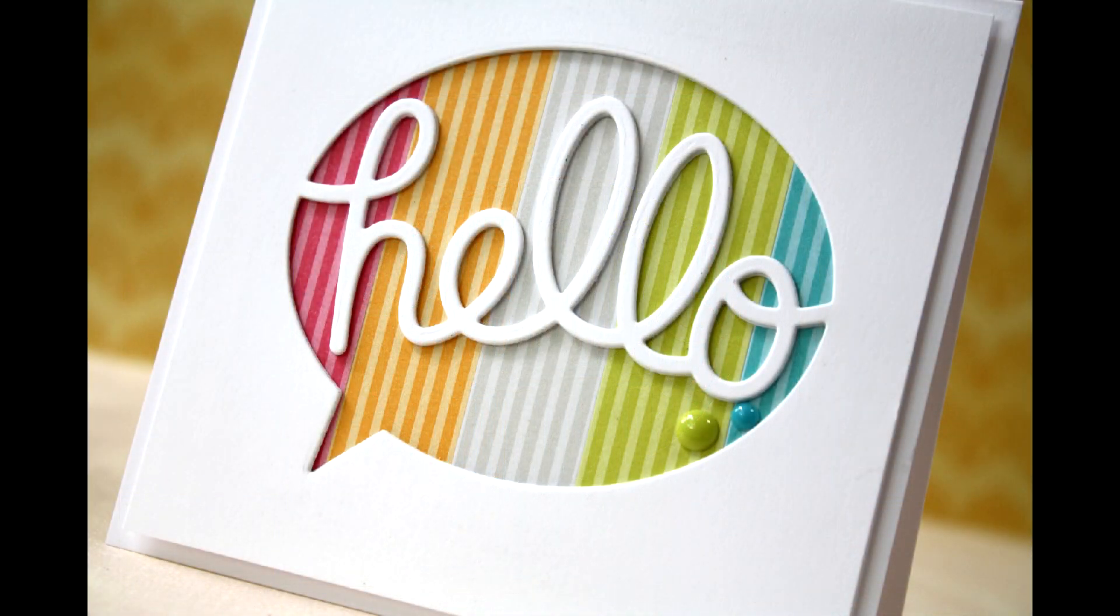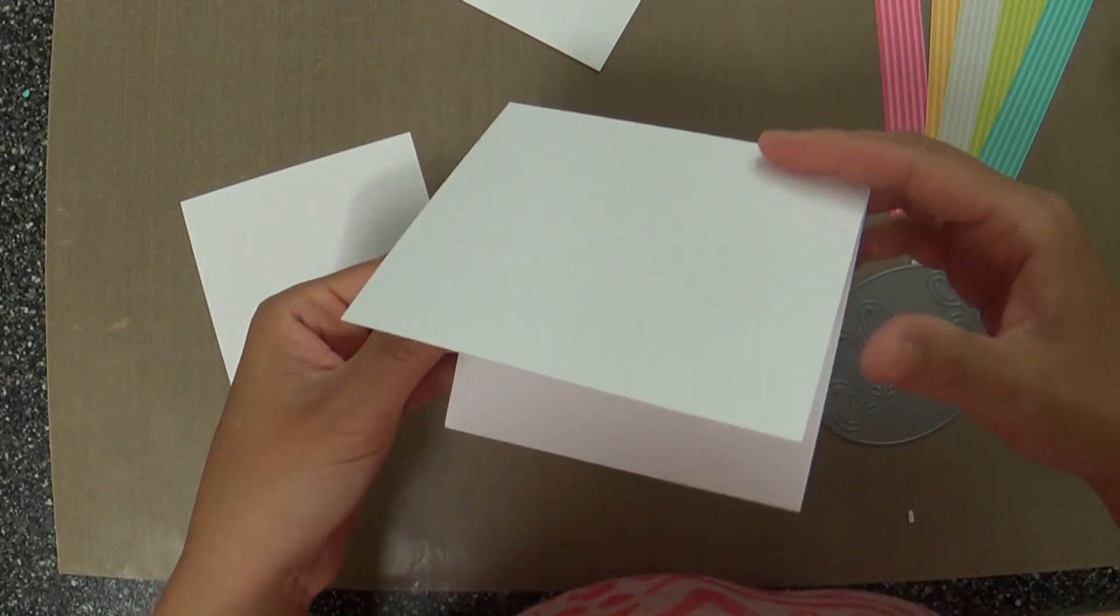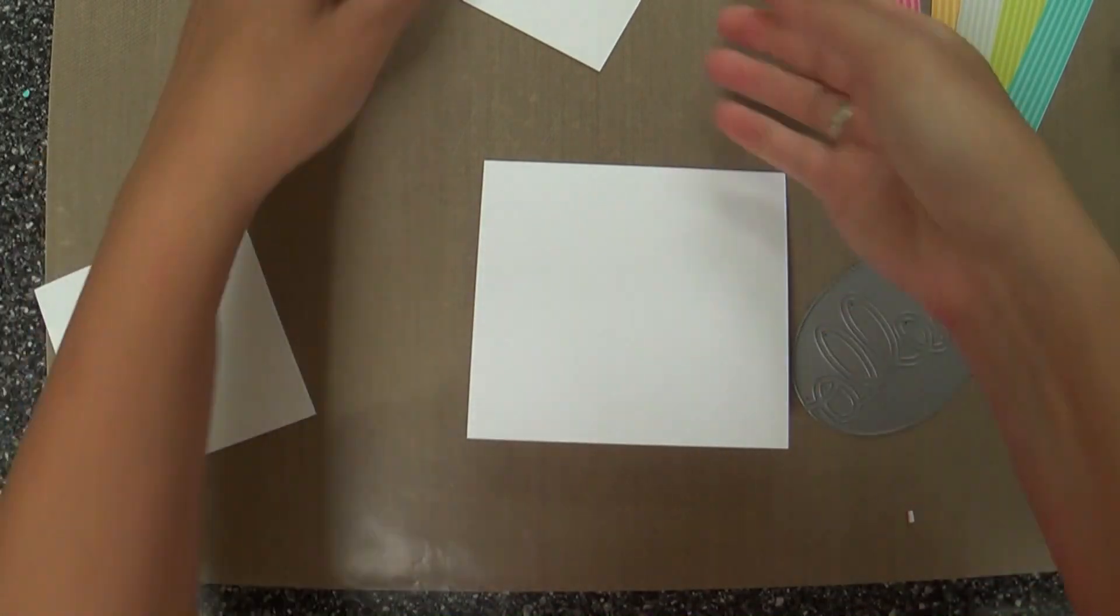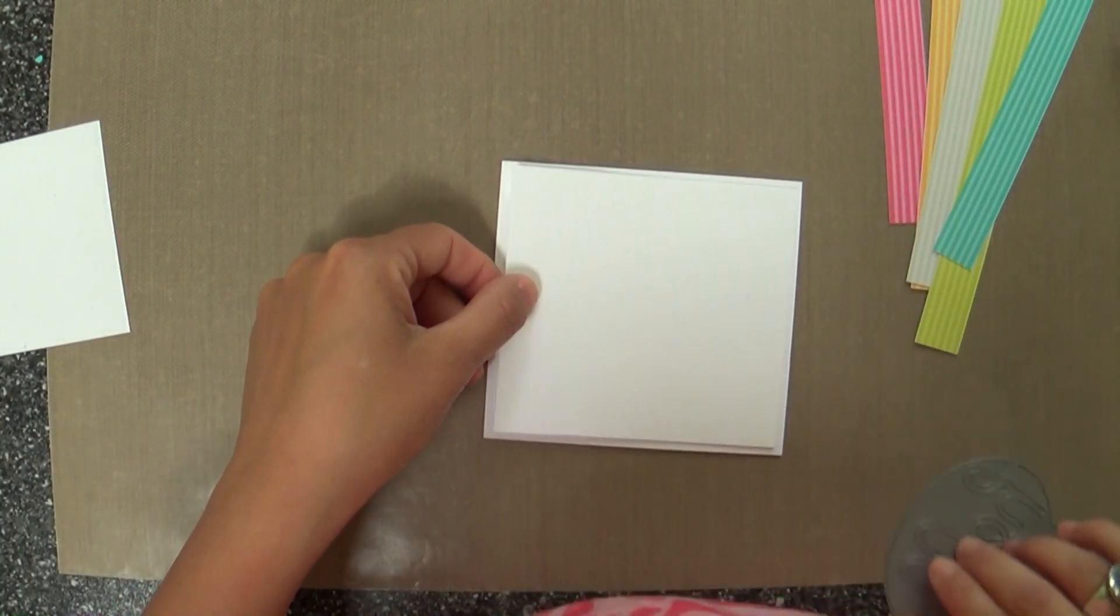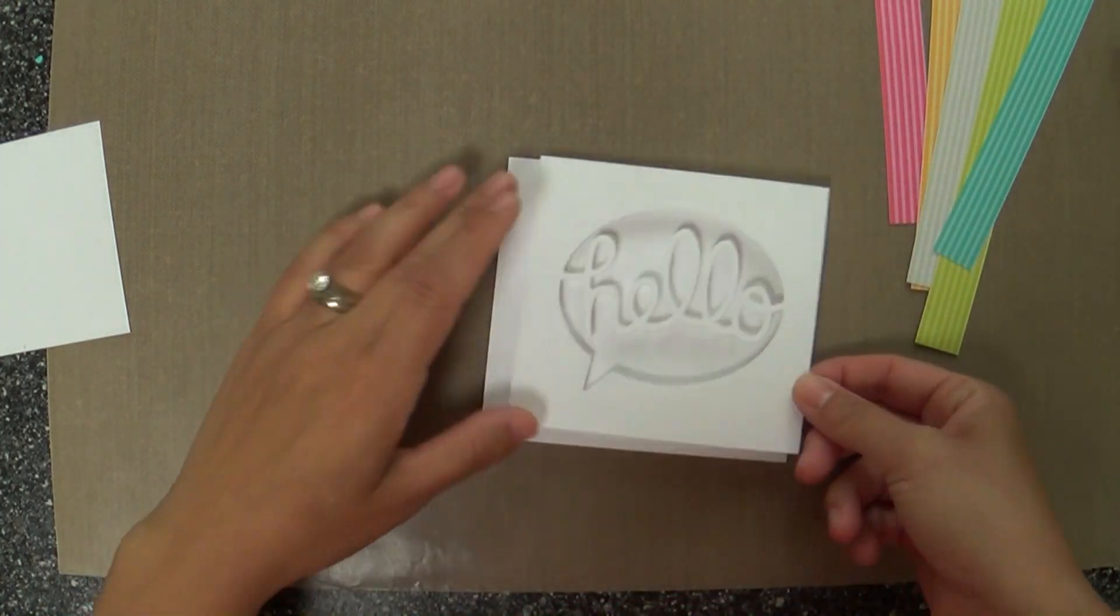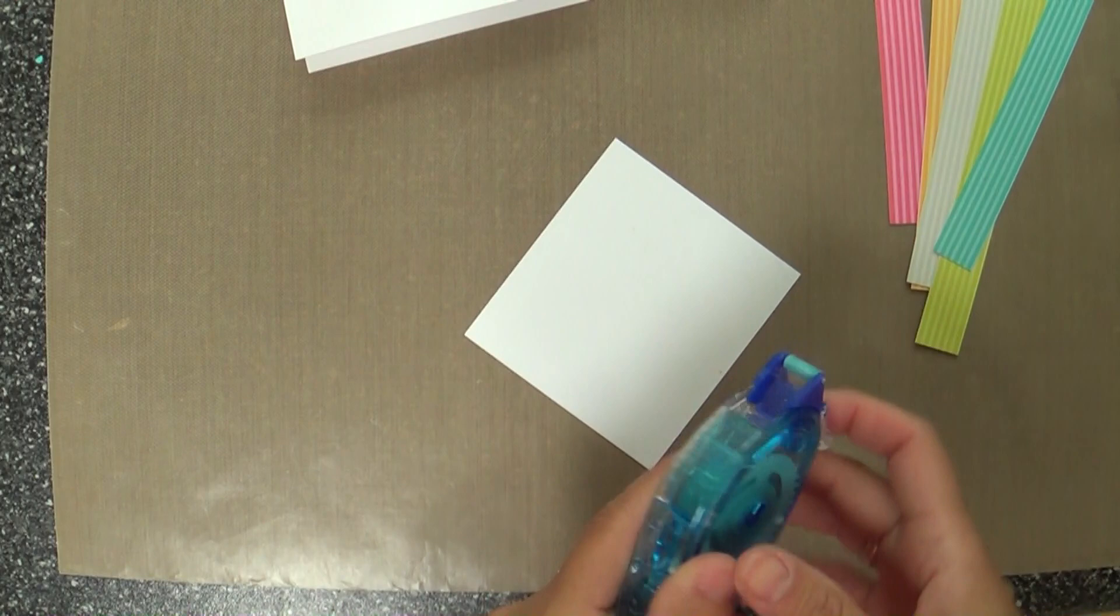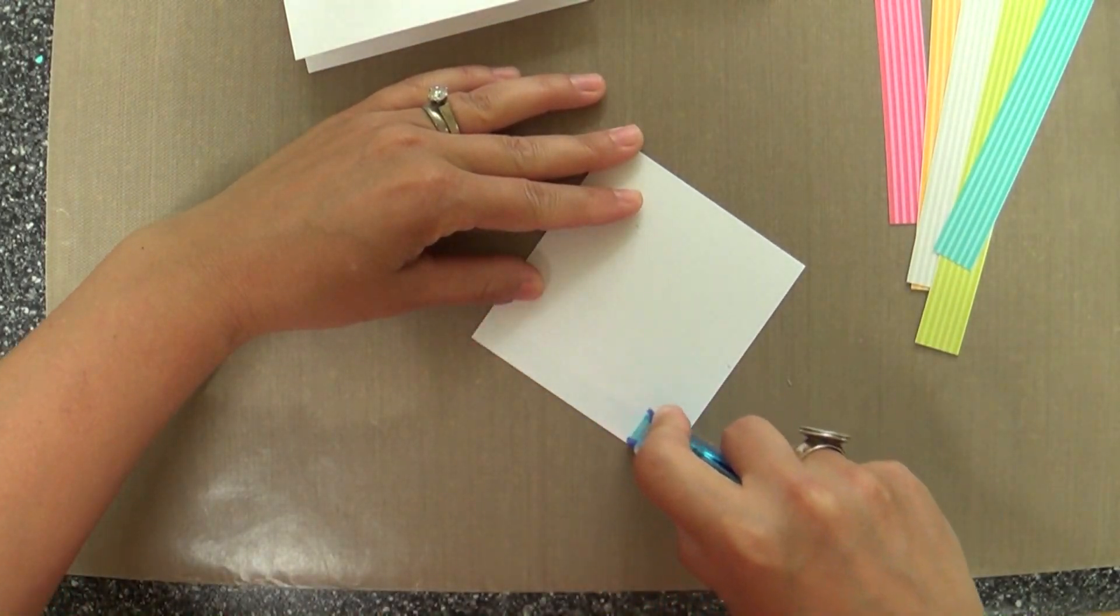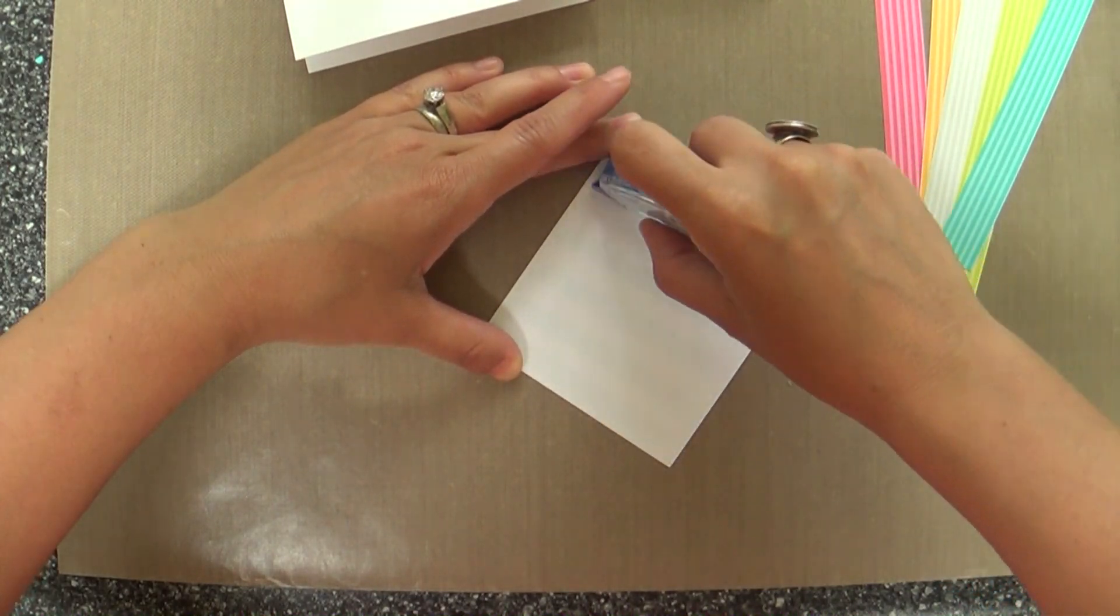This one uses the say hello die. This one's so fun. I love this speech bubble with the hello sentiment in it. Both of my cards that I've made today use zero stamping. It's all die cutting because all these new dies have the sentiment already built in. So you don't even need to do any stamping. It's great. Makes your cards come together really fun and they're really unique.